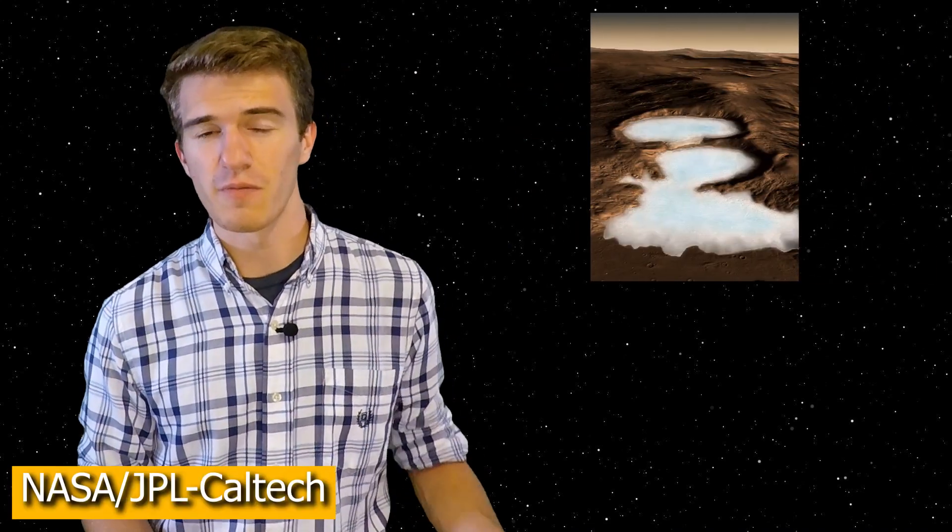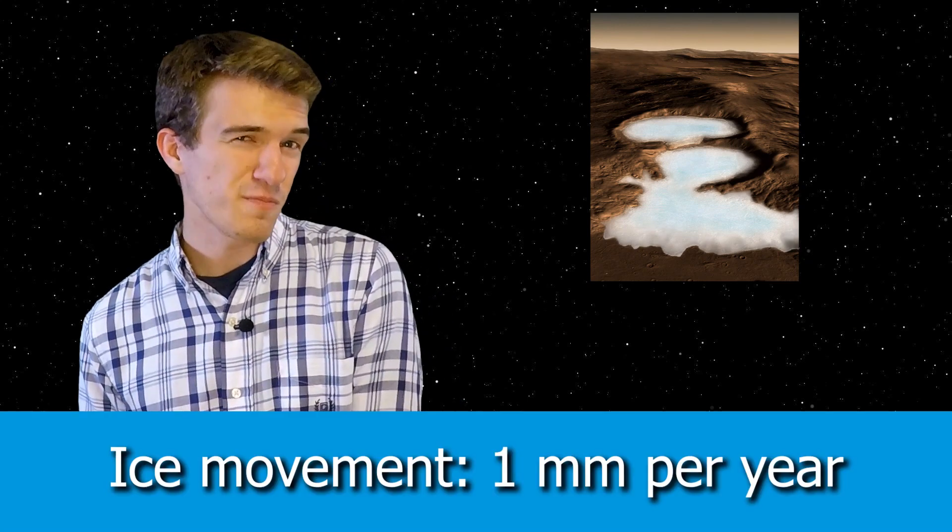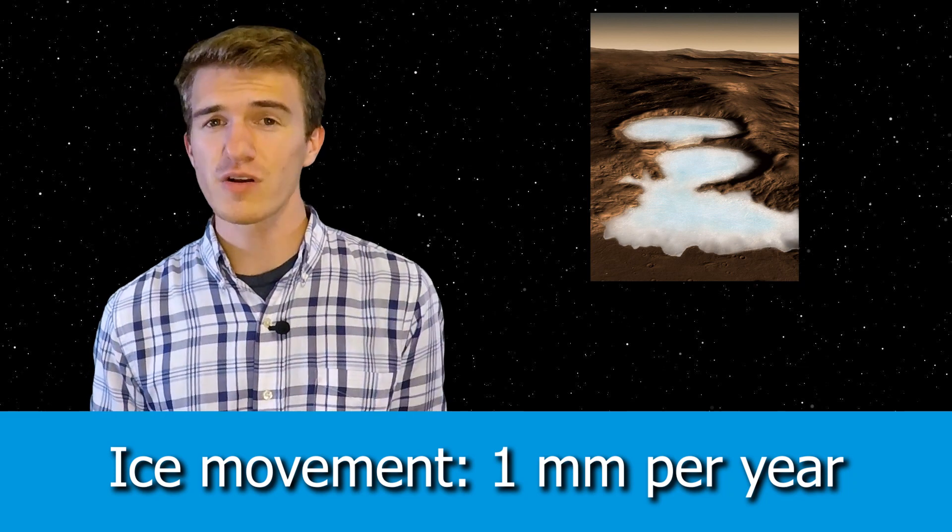However, due to the fact that it is much colder on Mars, this makes the ice, or water ice, a lot more rigid. Therefore, it acts much more like a stone than maybe a glacier that you would imagine here on Earth. So it's predicted that this ice moves about 1 millimeter per year on Mars.